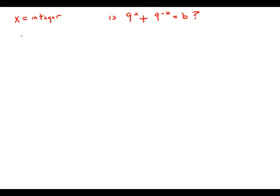Statement number one gives us this rather complicated expression: 3 to the x plus 3 to the negative x equals the square root of b plus 2.